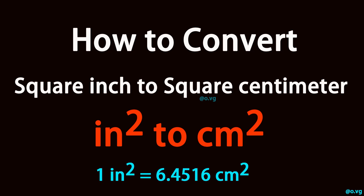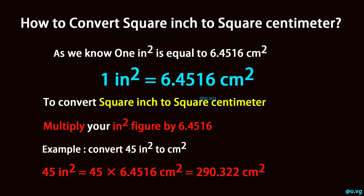How to Convert Square Inch to Square Centimeter. As we know, 1 square inch is equal to 6.4516 square centimeters.